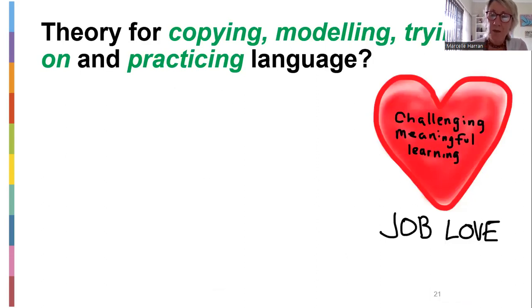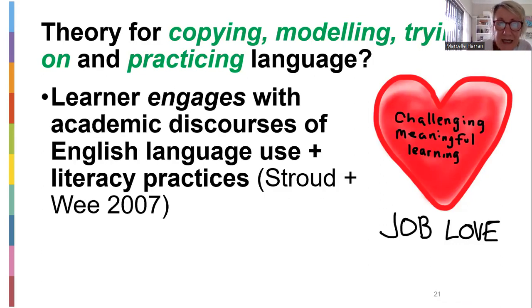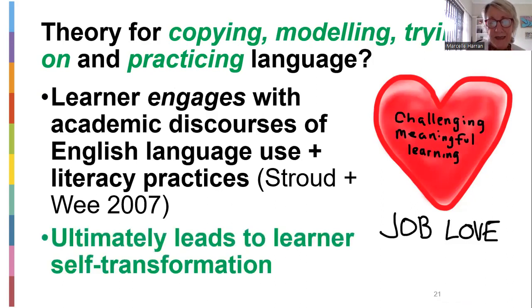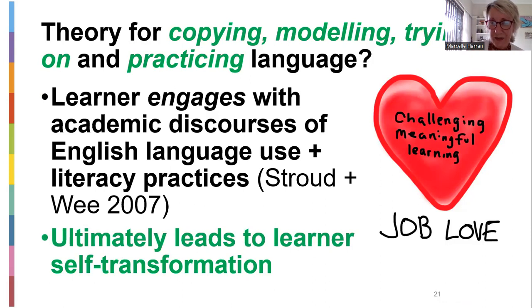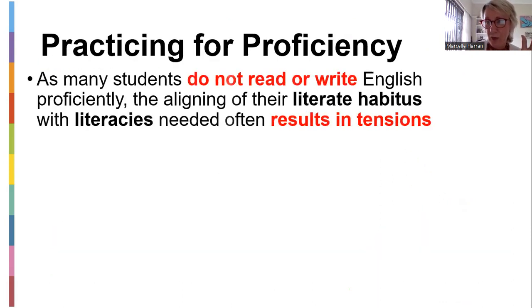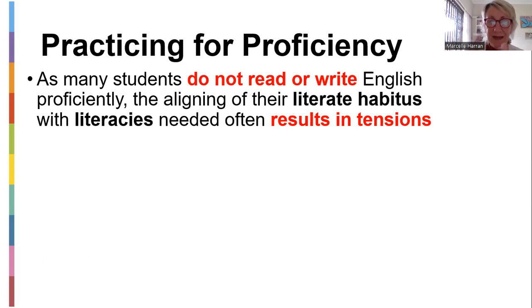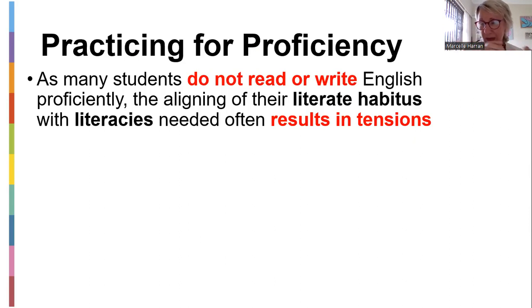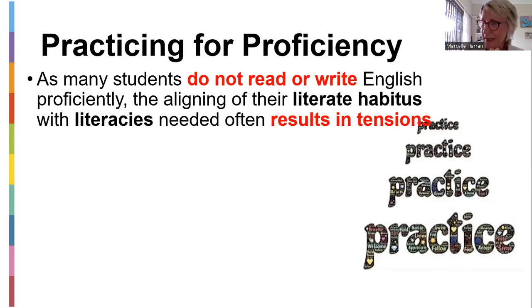So you have some theories for copying, modeling, trying on, and practicing language. The learner engages with academic discourse, language use, and literacy practices, which will ultimately lead to self-transformation. If you don't give them time to practice, they can't engage with language use and literacy practices. Many students do not read or write in English proficiently — even if they are English speaking. To align their literate habitus with their home literacies results in tensions within them — they don't want to read or write because there's a tension between the way they speak and the way they read from home backgrounds. So they must practice, practice, practice.